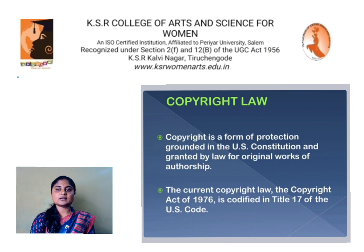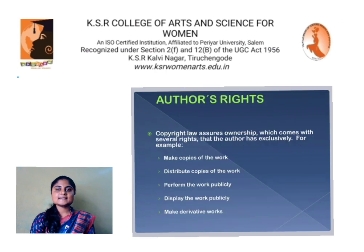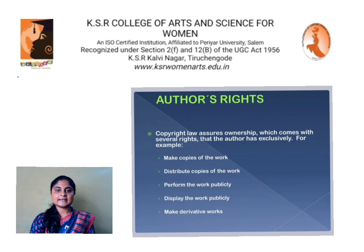The current copyright law, the Copyright Act of 1976, is codified in Title 17 of the U.S. Code. Author's rights: copyright law assures ownership which comes with several rights that the author has exclusively — for example, make copies of the work, distribute copies of the work, perform the work publicly, display the work publicly, and make derivative works.